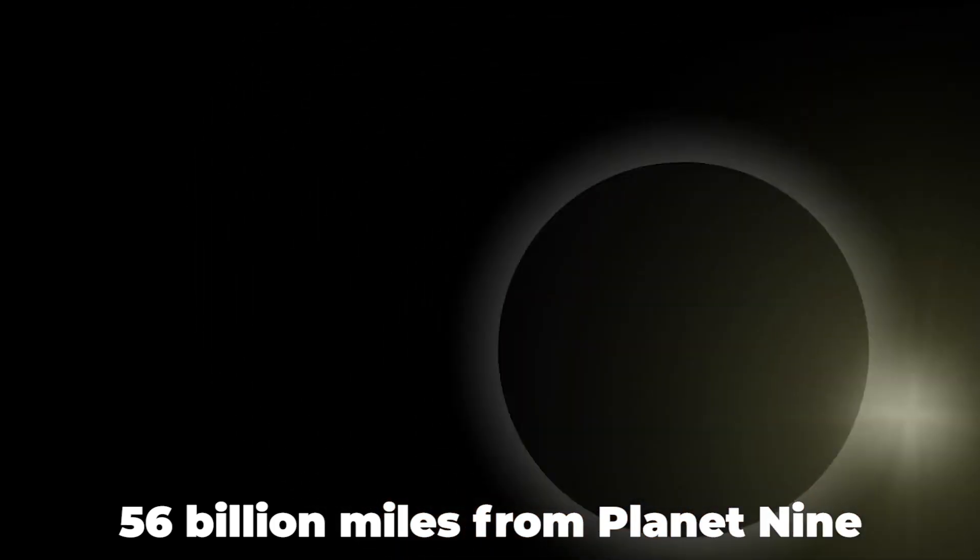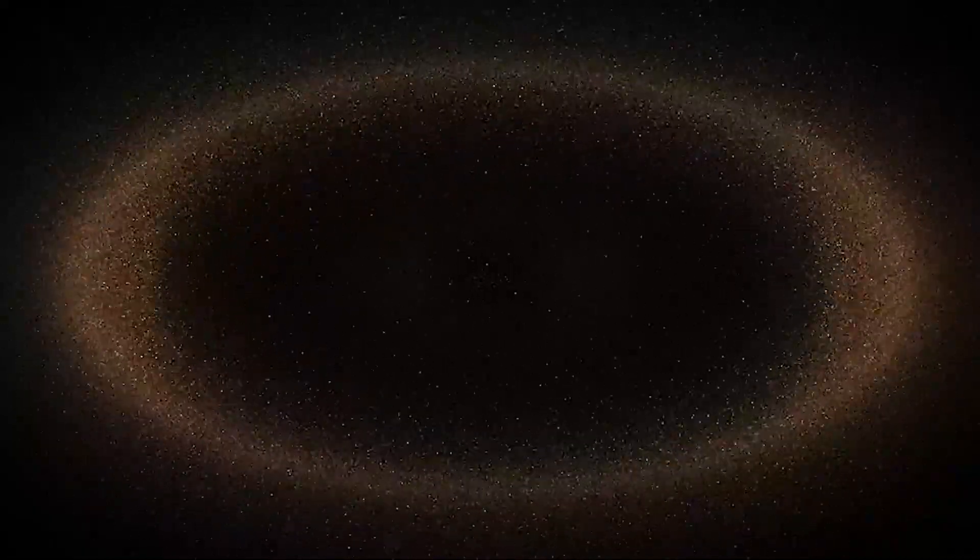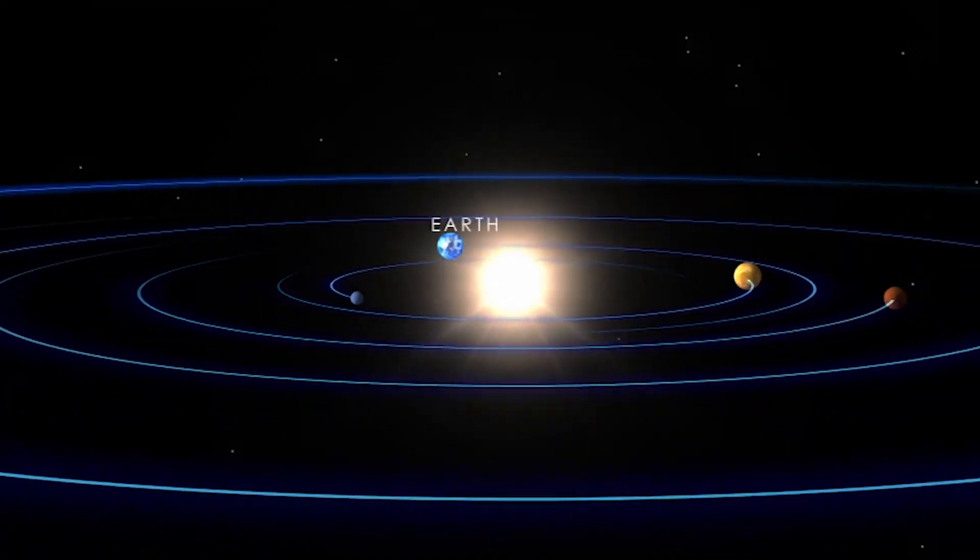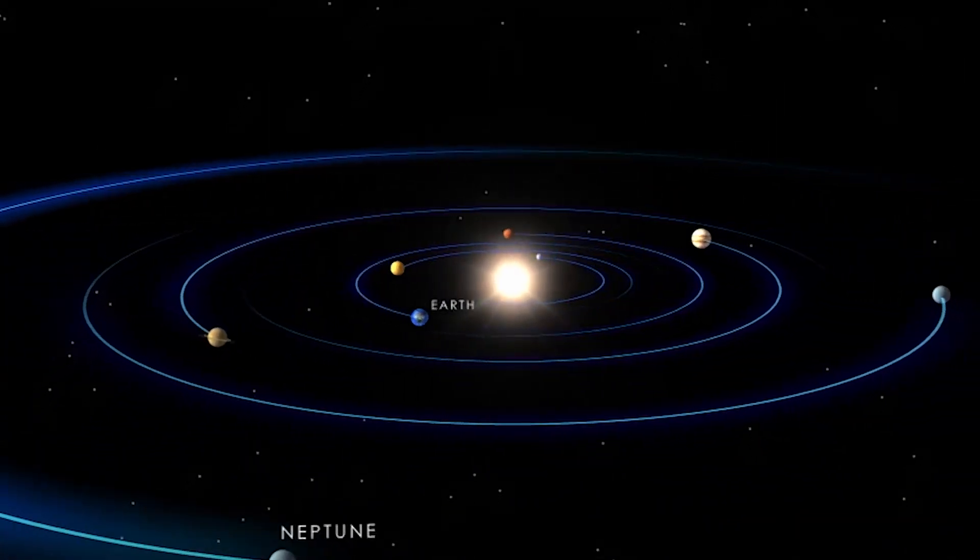The sun is expected to be 56 billion miles from Planet 9 on average. The sun would appear to be just another star in the endlessly dark sky at that distance, though it is still far away at 380 times the distance between the sun and Earth, and 10 times the distance between the sun and Neptune.